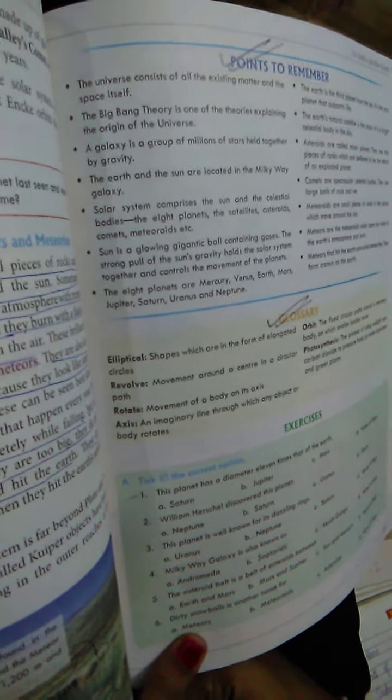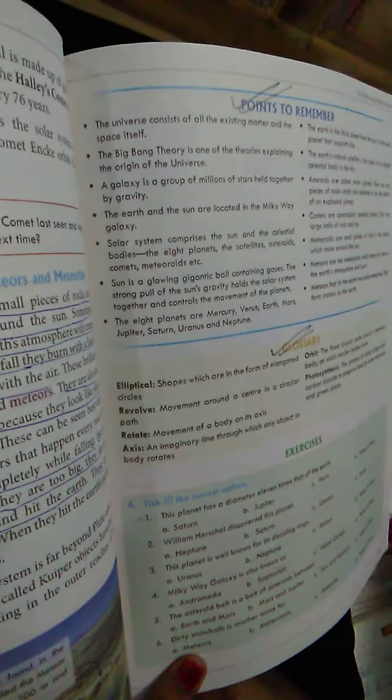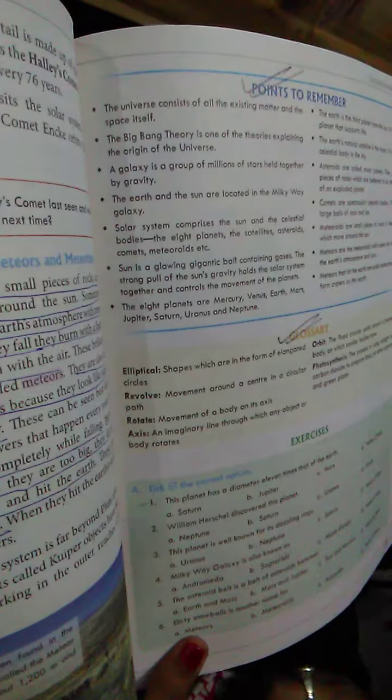Meteors are the meteoroids which come too close to the Earth's atmosphere and burn. Meteoroids that hit the Earth are called meteorites. They form craters on the Earth.